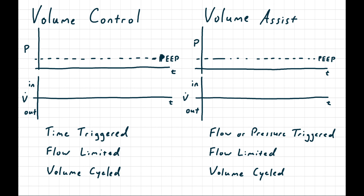Let's draw out volume control, which you're very familiar with. We start with zero flow, time triggers a constant flow breath, we cycle to expiration, trigger another breath, and cycle to another expiration. Circuit pressure starts at PEEP, there's an initial rise for inspiration, we follow the pulmonary pressure up for constant flow, and repeat for the next breath.